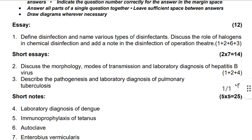Question number two is short notes — 14 marks. Discuss the morphology and modes of transmission — two marks — and laboratory diagnosis of Hepatitis B virus — four marks. Question number three: describe the pathogenesis — two marks.